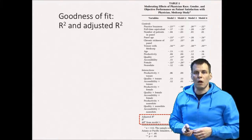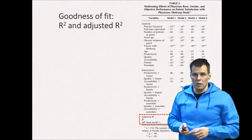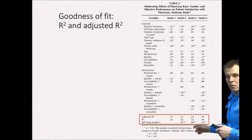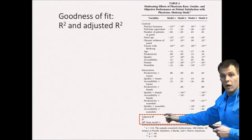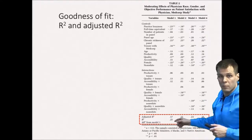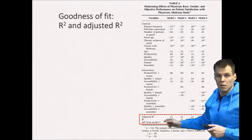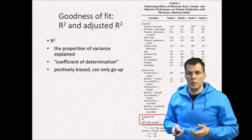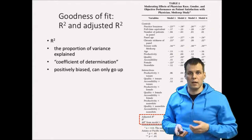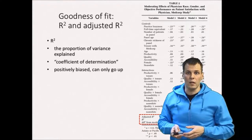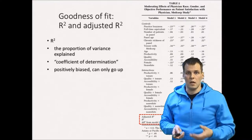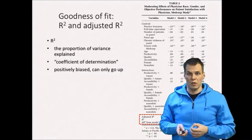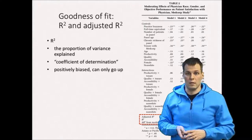One of the easiest ways to start interpreting regression analysis is to look at the R-square statistic. The R-square is calculated based on the regression results and is typically presented at the bottom of the regression analysis table. A related statistic is the adjusted R-square. The R-square tells us how much the independent variables together explain the dependent variable — it's an estimate of the quality of the model, sometimes referred to as goodness of fit or coefficient of determination.